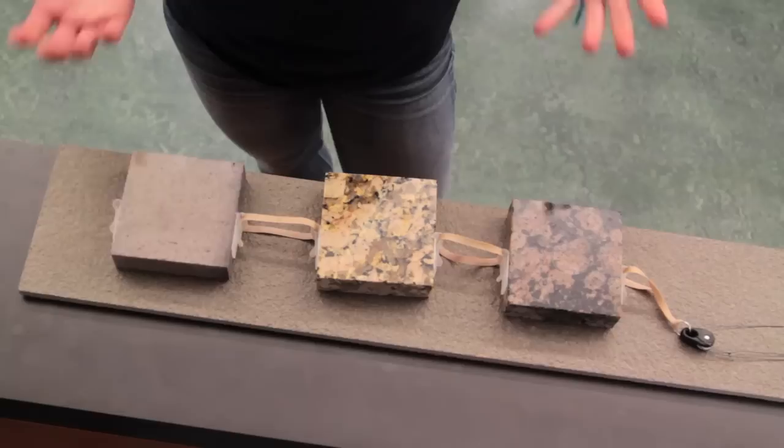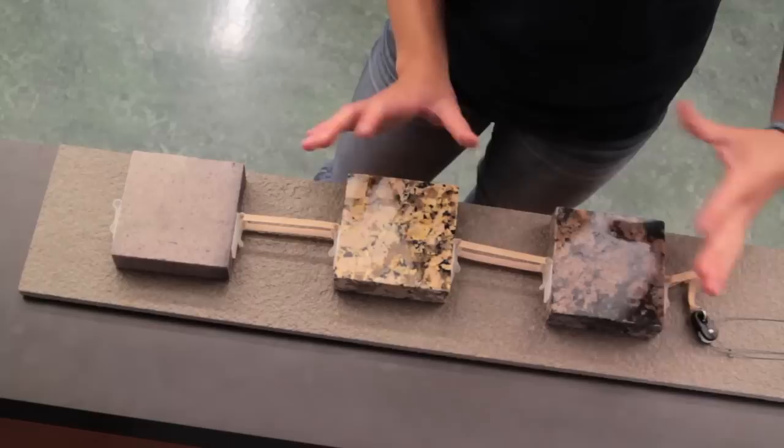Sometimes we see really irregular behavior. For example, sometimes we saw two sliders occurring at the same time, or even three.